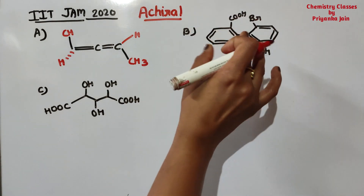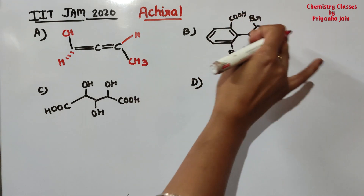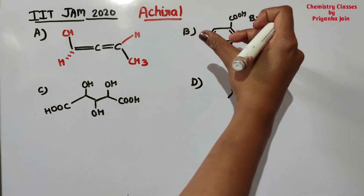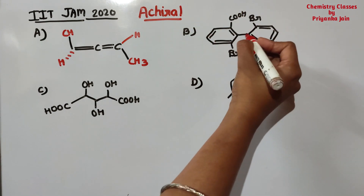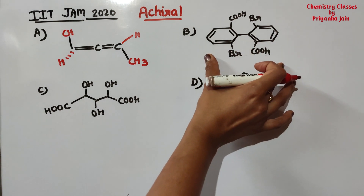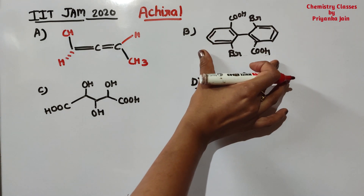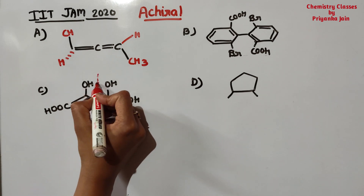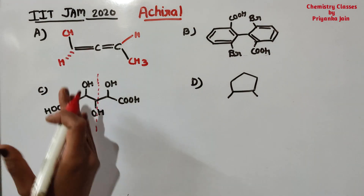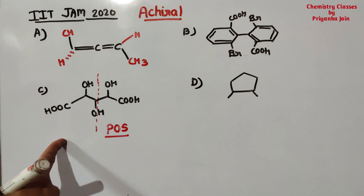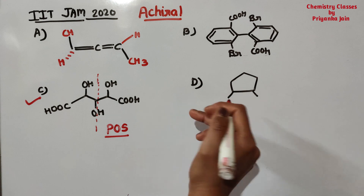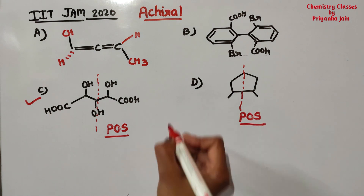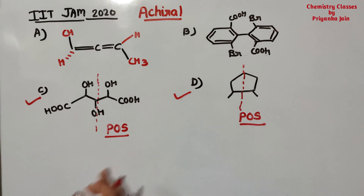Option C has a plane of symmetry through the OH group — we can reflect the molecule from here — so this molecule is achiral. Option D also has a plane of symmetry, so it is also achiral. Therefore options C and D are the right answers.